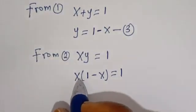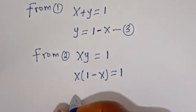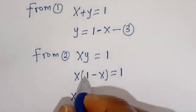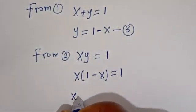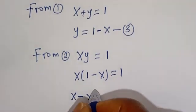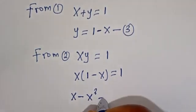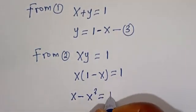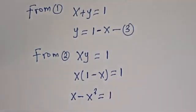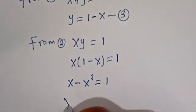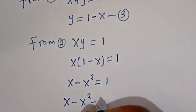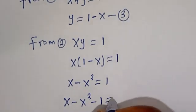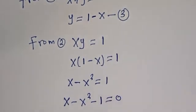Let's open the bracket. X times 1 is X, then X times minus X gives minus X squared. So we have X minus X squared is equal to 1. Then X minus X squared minus 1 is equal to 0.